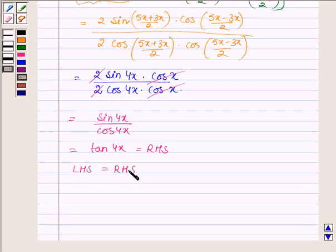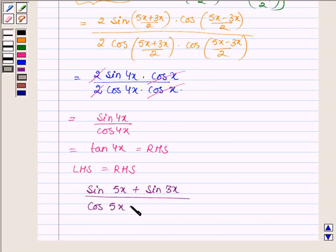And thus we have left hand side is equal to the right hand side or sin 5x plus sin 3x upon cos 5x plus cos 3x is equal to tan 4x. Hence proved.